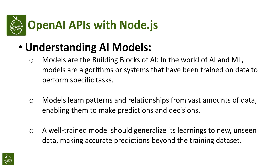Before we explore the various types of AI models, let's understand what models are in the context of artificial intelligence and machine learning. Models are the building blocks of AI. In the world of AI and machine learning, models are algorithms or systems that have been trained on data to perform specific tasks.